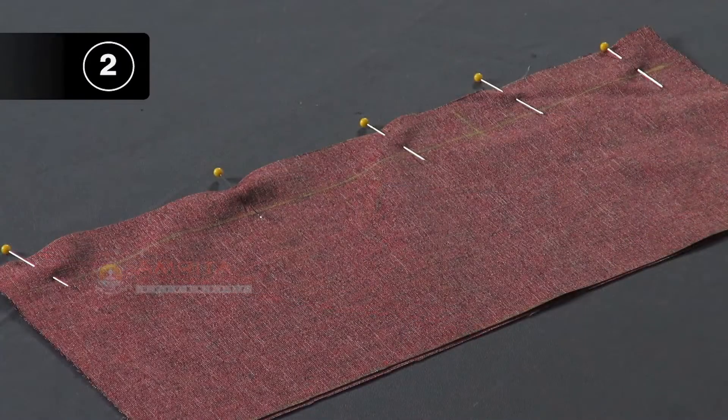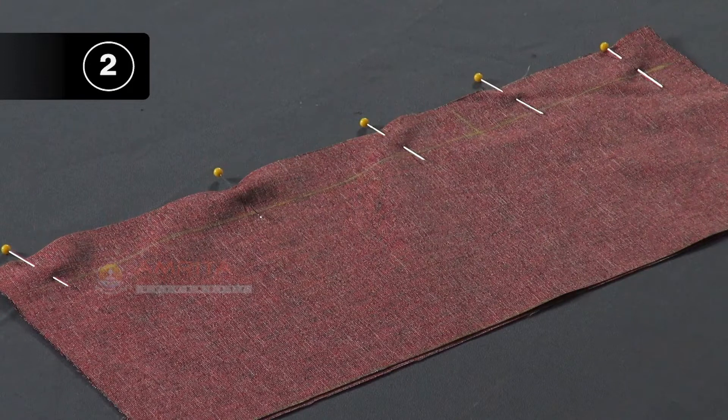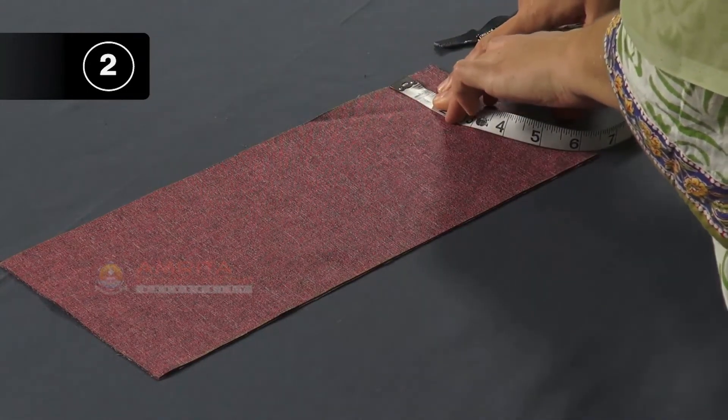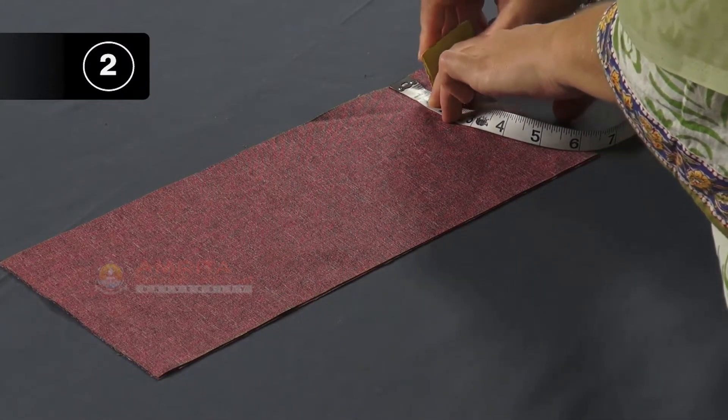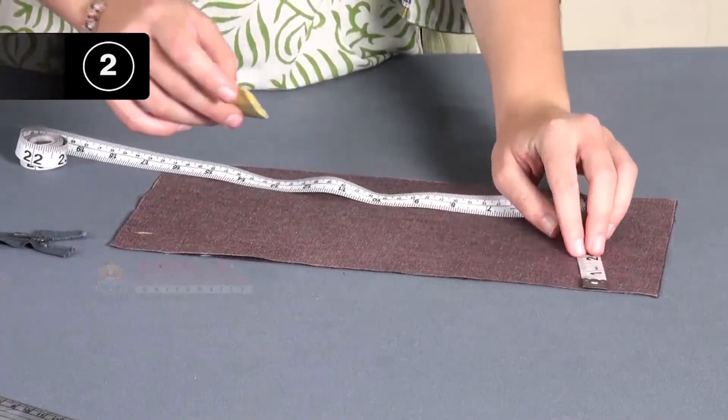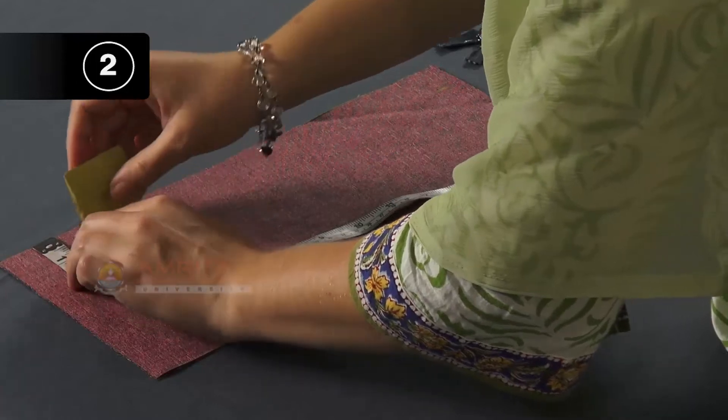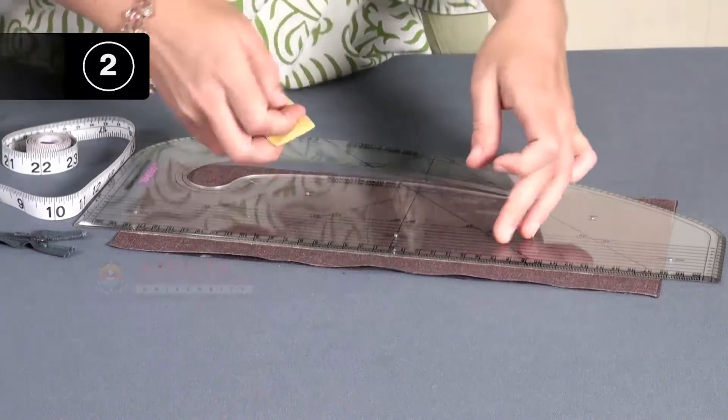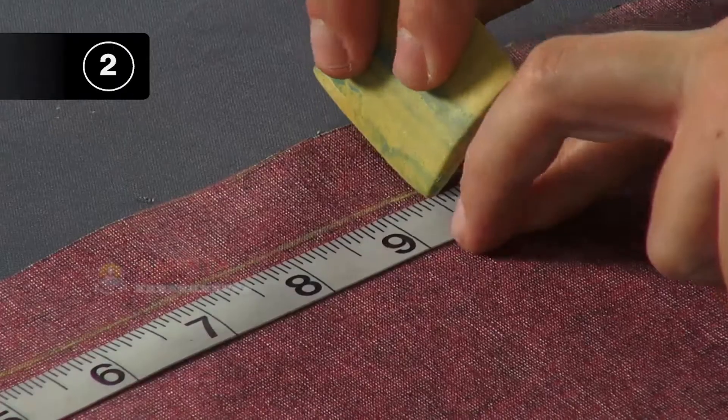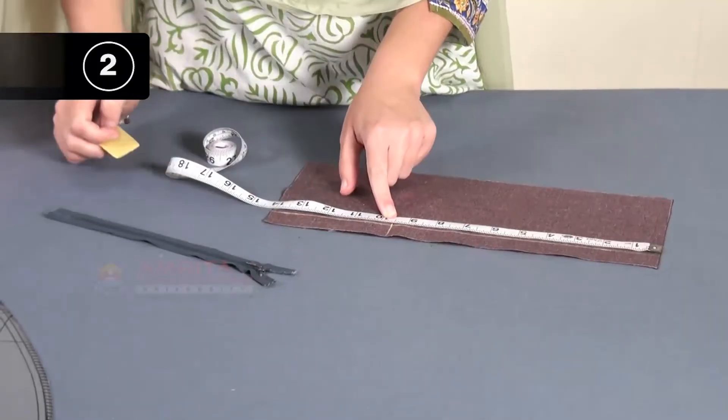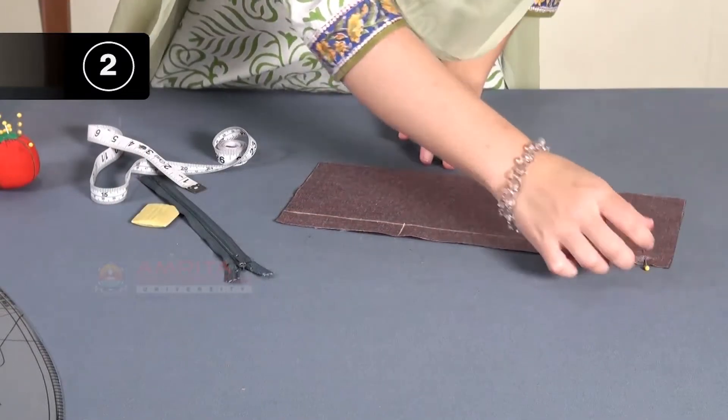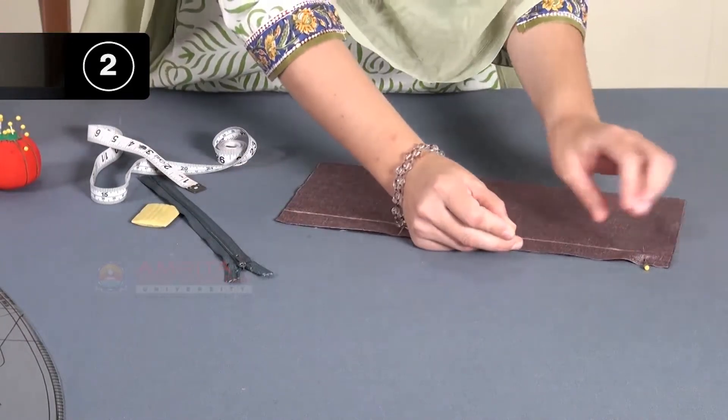Step 2: Mark seam allowance and position of zipper and pin two fabric pieces. Mark a 1 inch seam allowance along one of the cut edges of the wrong side of one fabric piece. Also mark the position of the zipper. Now pin the two pieces with the right side together with the marked seam line on the upper side.